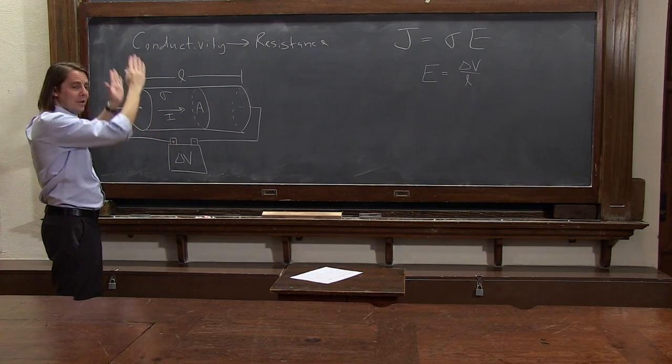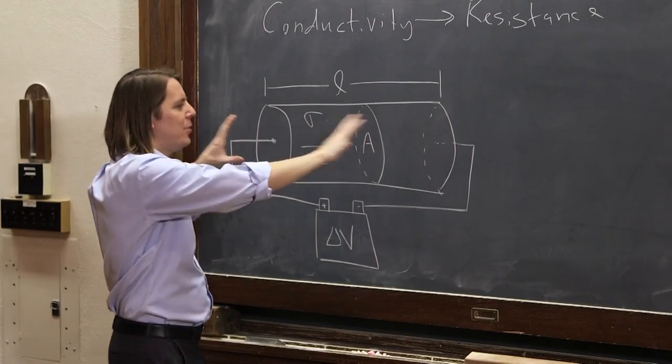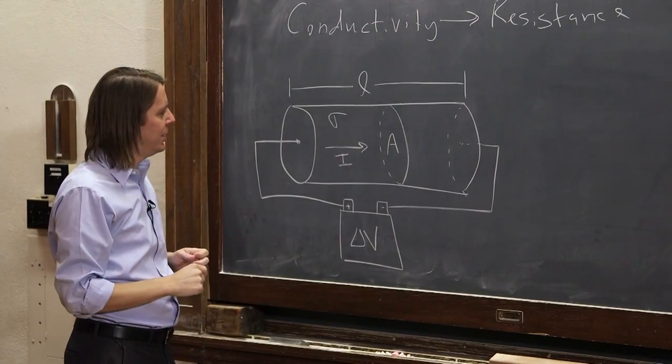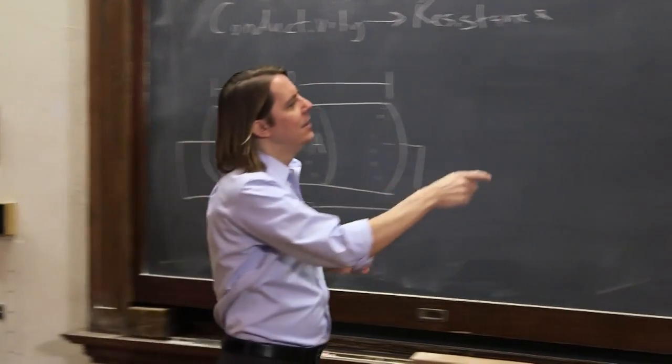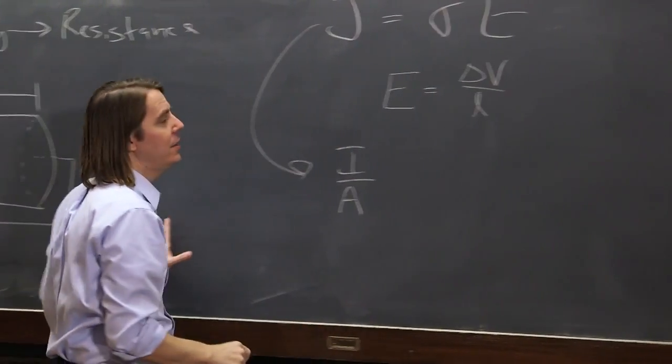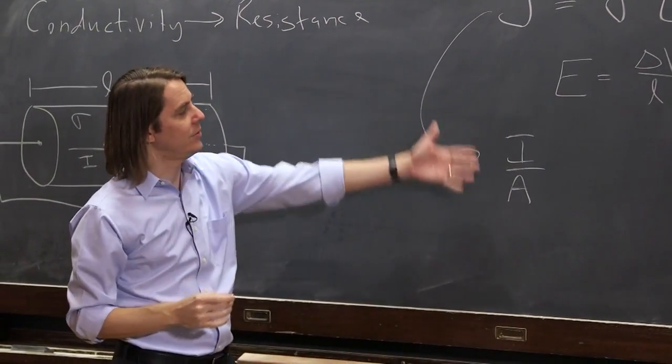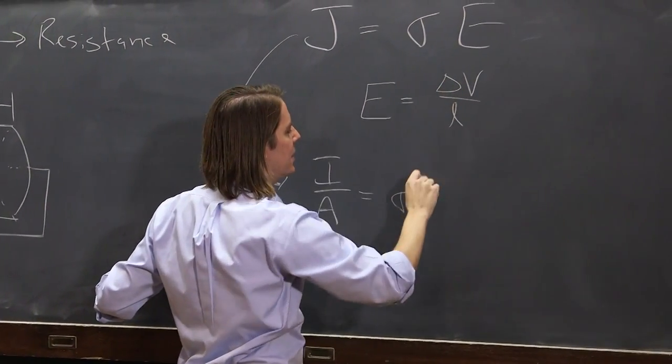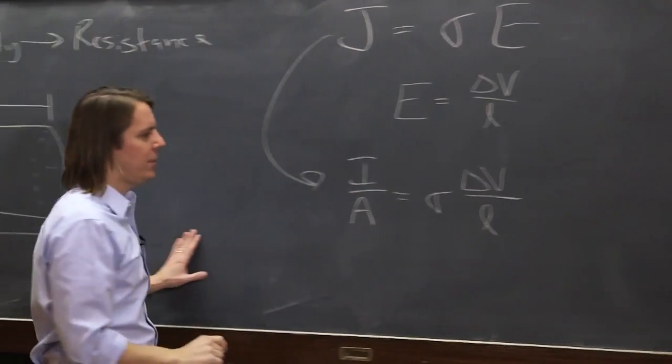In a parallel plate capacitor, you would have a nice uniform field like that. Well, it turns out inside of a metal wire like this, you also get a fairly uniform field, even if you start bending up the wire. So we can substitute that for E. And then we can also substitute I over A for the current density. That's the definition of current density, equals sigma. And then E is the voltage difference over the length.